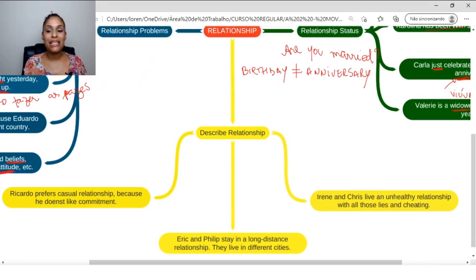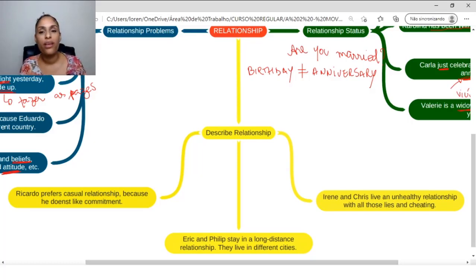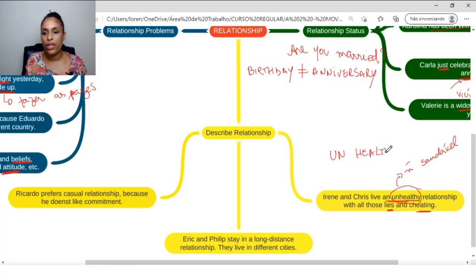Now we are going to see quickly how we describe a relationship. How can I describe a relationship? Let's see. So, for example. Irene and Chris live in an unhealthy relationship with all those lies and cheating. So, unhealthy. It's an unhealthy relationship. Unhealthy. So, the opposite would be healthy. So, this UN that we are seeing in front of the word healthy is what is giving this idea of negation. So, if I live in a relationship, in a healthy relationship, I am in a healthy relationship. If I am in an unhealthy relationship, I am in a relationship that is not healthy.